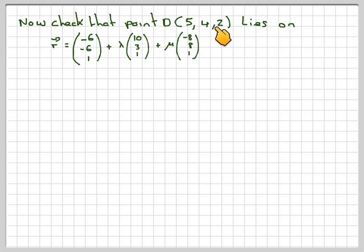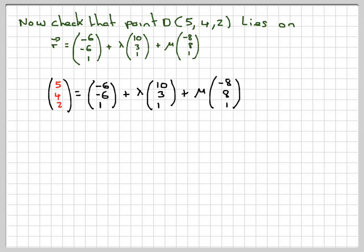So what we do, we put (5, 4, 2) in the form of a vector and put it equal to this equation. So it's (-6, -6, 1) plus lambda (10, 3, 1) plus mu (-8, 8, 1). And what we do, we're going to check each component and calculate for two of them. We'll calculate the values of lambda and mu and check to see whether they work in the third case.